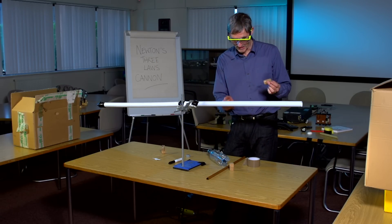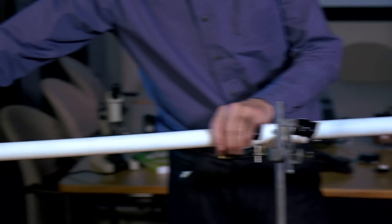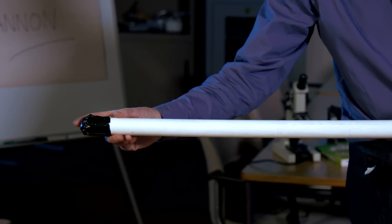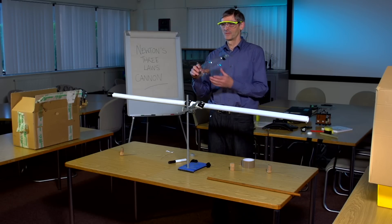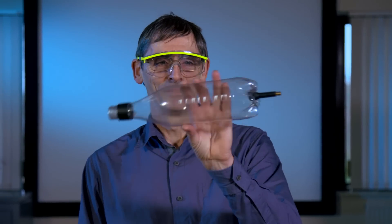The source of energy is compressed air in a soda bottle. We've converted the soda bottle by adding a tire valve on one end and a little collar so we can mount it to plumbing and make a good airtight seal.